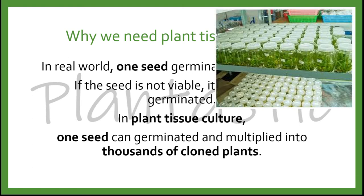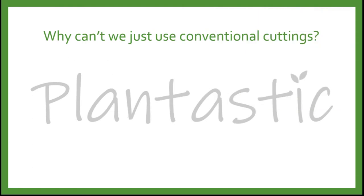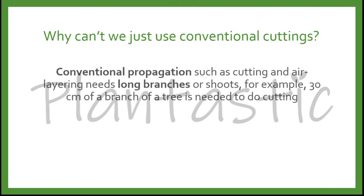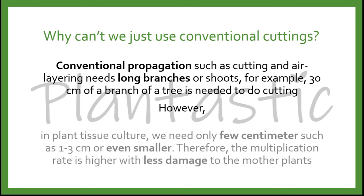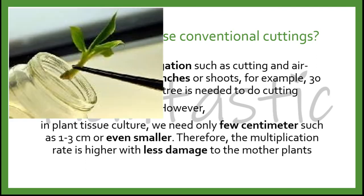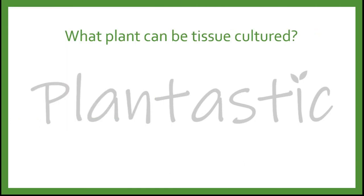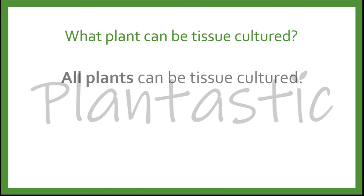Why can't we just use conventional cuttings? Conventional propagation such as cutting and air layering is good, but it requires long branches — for example, 30 centimeters of a branch for cutting or air layering. However, in plant tissue culture we need only 1 to 3 cm or even smaller, so the multiplication rate is very high with less damage to the mother plant. The most common question: what plants can be tissue cultured? All plants can be tissue cultured.